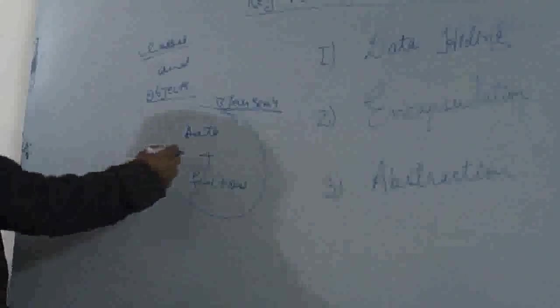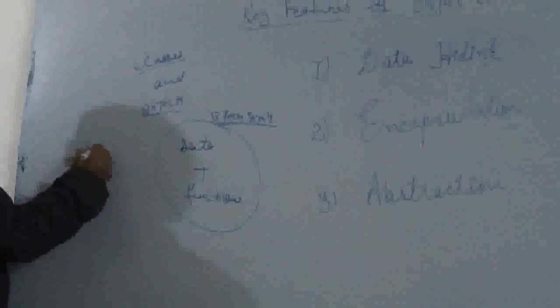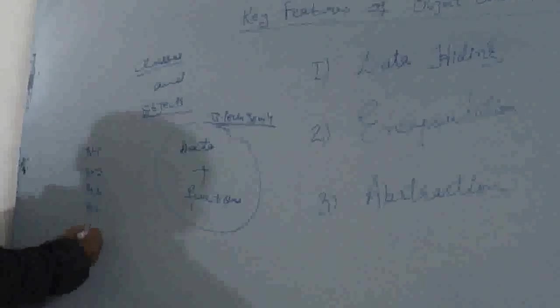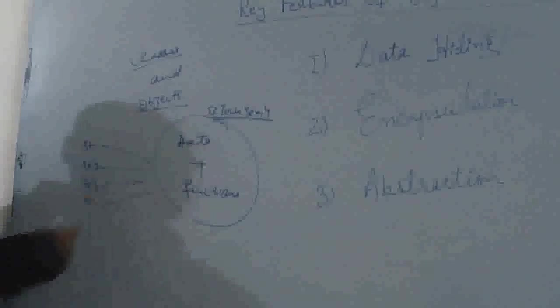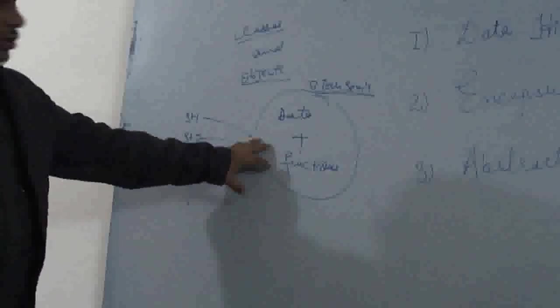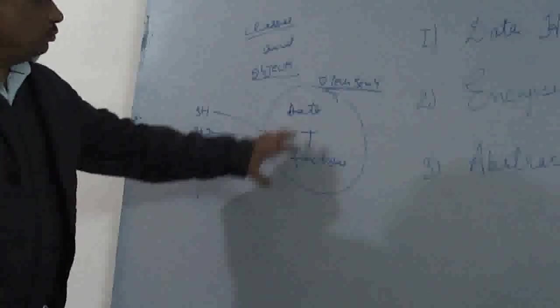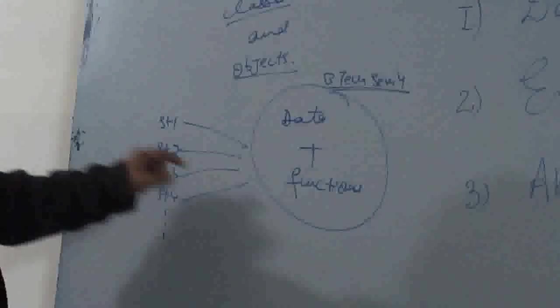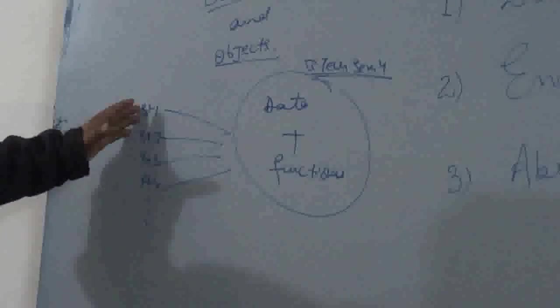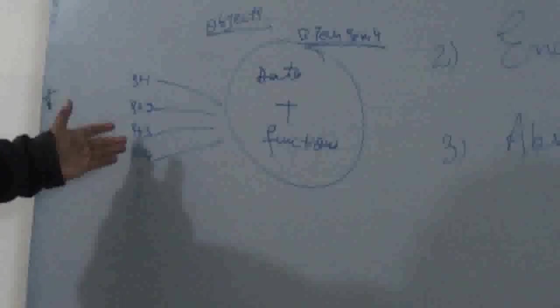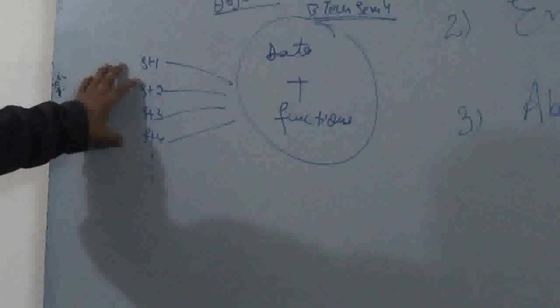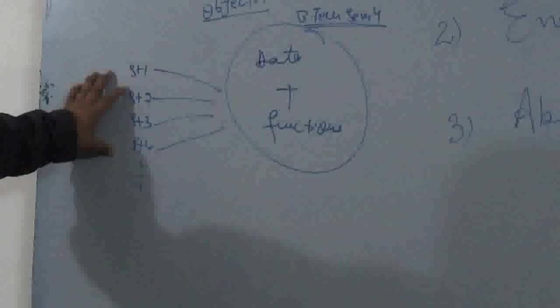And you people will be the objects: student 1, student 2, student 3, student 4. They will be the objects of this class. So all the data and functions which are being presented in the class, they will be applied upon these students, these objects. Student 1, student 2, student 3, student 4, etc. Again, I will say, objects are physical entities of the class.